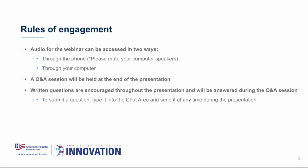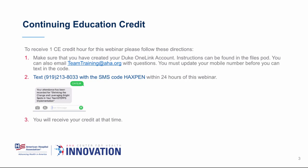You can download the slides from the webinar today in the file pod on your screen. You can also get continuing education credits. To receive one CE credit for this webinar, make sure you've created a Duke OneLink account — instructions are in the file pod. You must have your mobile number updated before you text in the code. The code for today's webinar is H-A-X-P-E-N. You must do that within 24 hours. Credit is available for physicians, nurses, pharmacy, and allied health professions.